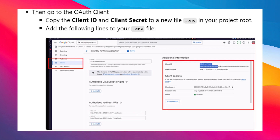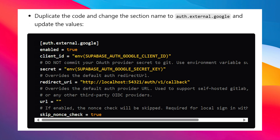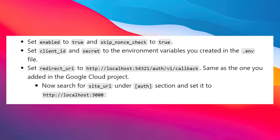Go to the OAuth client and copy the client ID and client secret to a new .env file in your project root. Then add the following lines to your .env file. After this, you'll have to update the Supabase config. Open config.toml and search for the auth.external section — you should see a section that looks something like this. Duplicate the code and change the section name to auth.external.google and update the values. Set enable to true and skip_nonce_check to true. Set client ID and secret to the environment variables you created in the .env file, and set the redirect URI to the same one you added in the Google Cloud project.